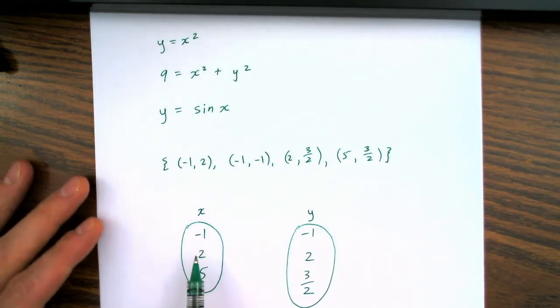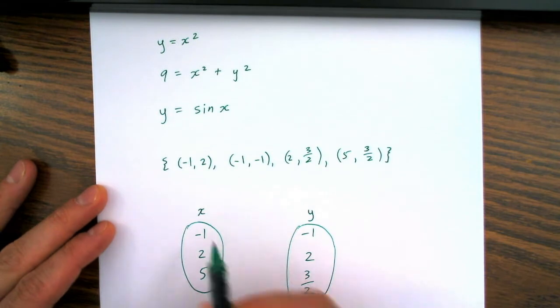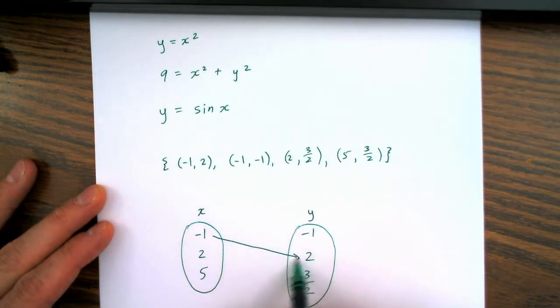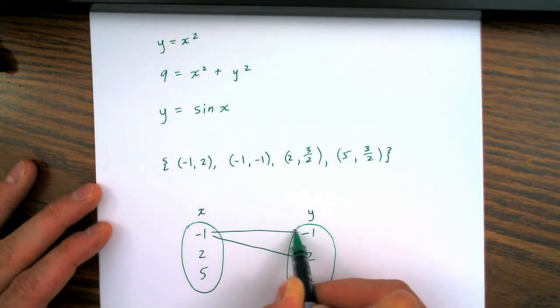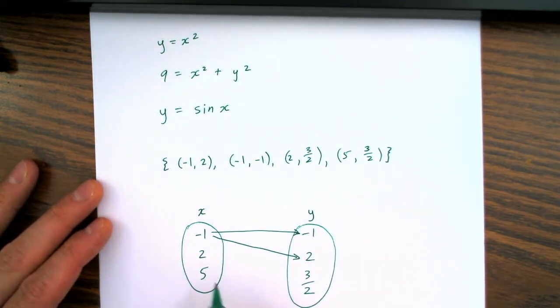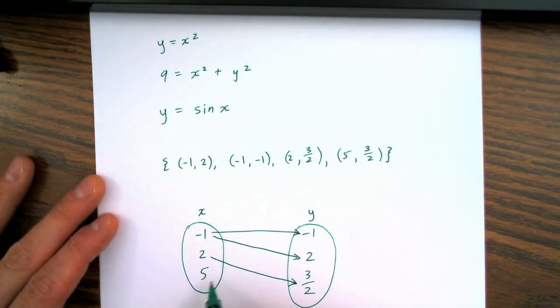When x is negative 1, it can be mapped to a 2. It can also be mapped to a negative 1. A 2 can be mapped to 3 over 2. And a 5 can be mapped to 3 over 2.